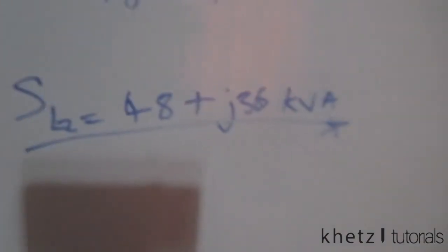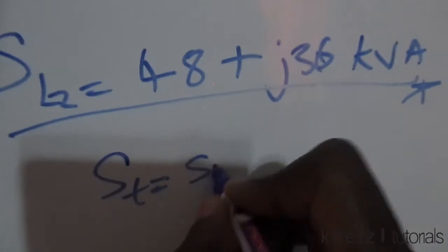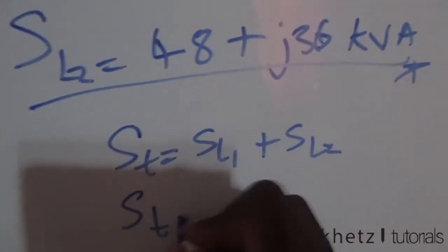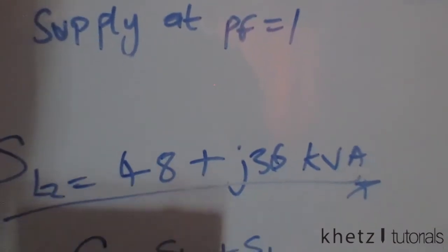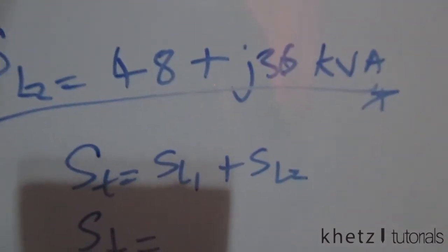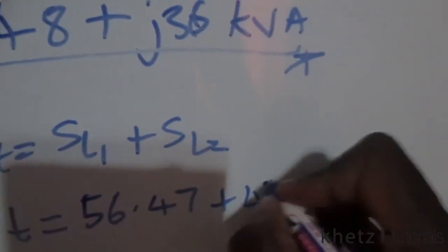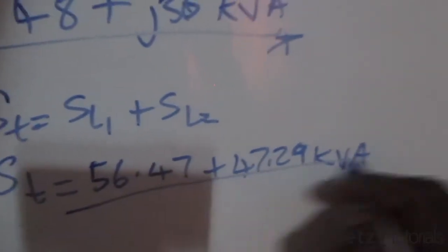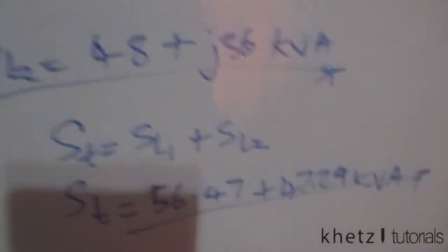Adding the complex power of load two to load one gives the total complex power for the full load: 56.47 plus j47.29 kilovolt amperes.